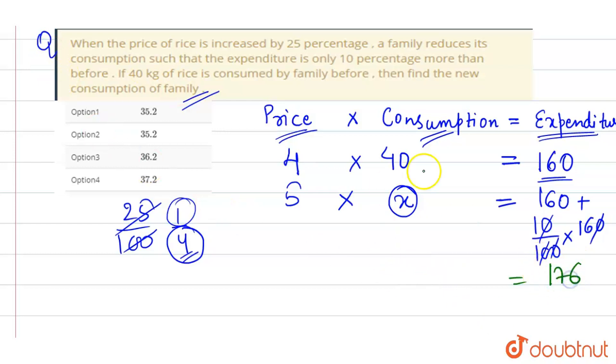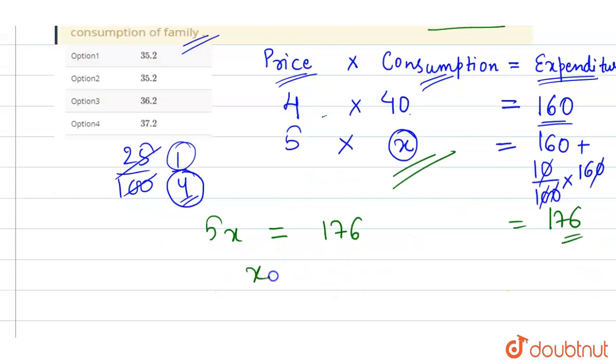It is very simple to find the consumption. We have to find the new consumption of family. If 4 times 40 equals 160, that means 5 times x equals 176. So x equals 176 divided by 5.